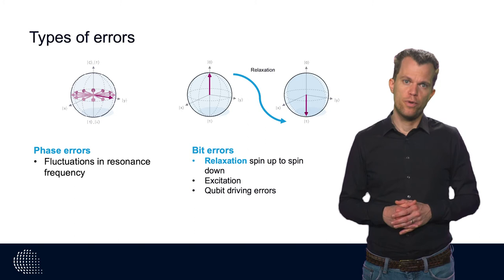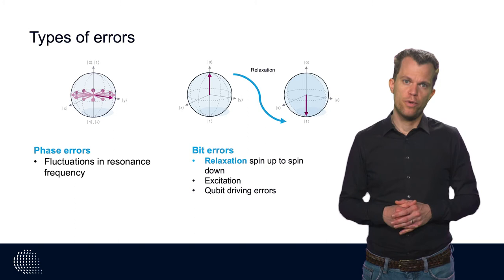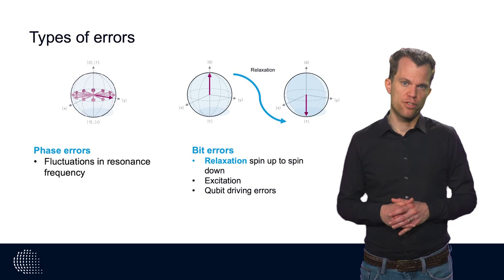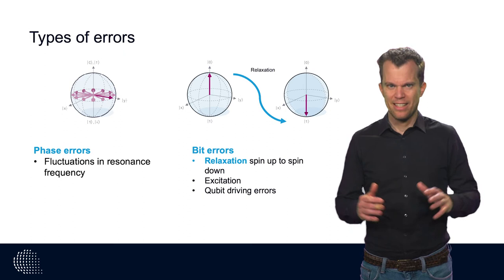Examples that lead to these fluctuations are fluctuations in the external magnetic field, fluctuations in a microwave source used to operate the qubits, but also in the g-factor of the qubit. These same errors will not directly lead to bit flip errors.